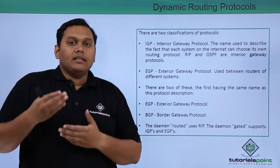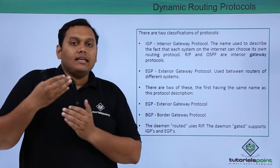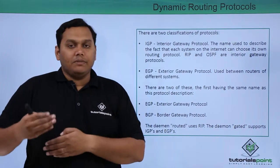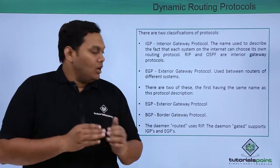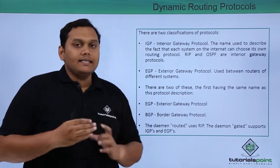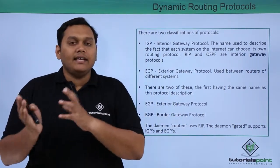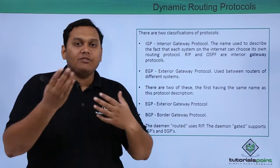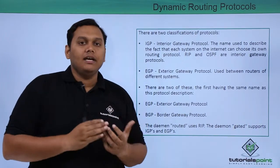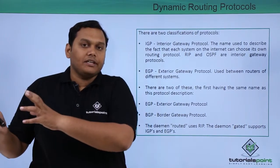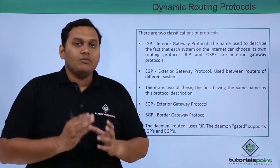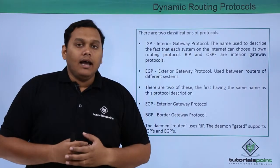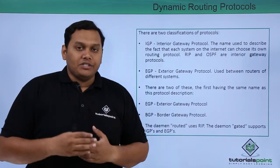The daemon 'routed' is used for RIP, and the daemon 'gated' supports both IGPs and EGPs. So routed and gated are different — interior gateway protocol and exterior gateway protocol are different. This is about dynamic routing protocol and its functions.